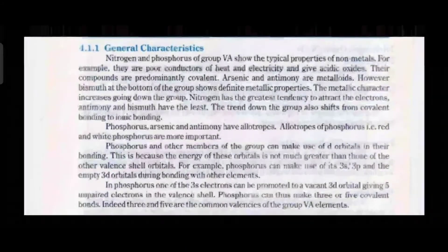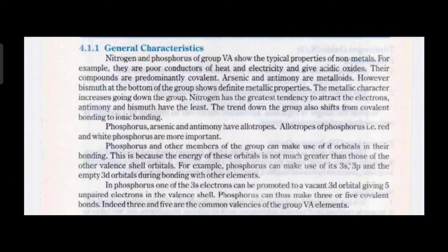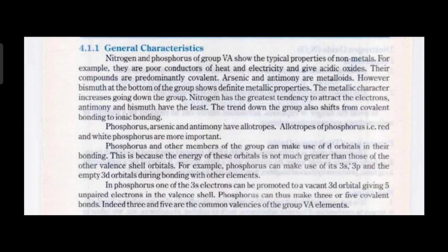The elements of group 5A give oxides of the type M₂O₃, M₂O₄, and M₂O₅. Nitrogen also gives N₂O and NO. N₂O is called laughing gas — its formula N₂O is very important from an exam point of view. The elements of group 5A also give hydrides of general formula MH₃, and trihalides and pentahalides of general formula MX₃ and MX₅. However, nitrogen cannot form MX₅.